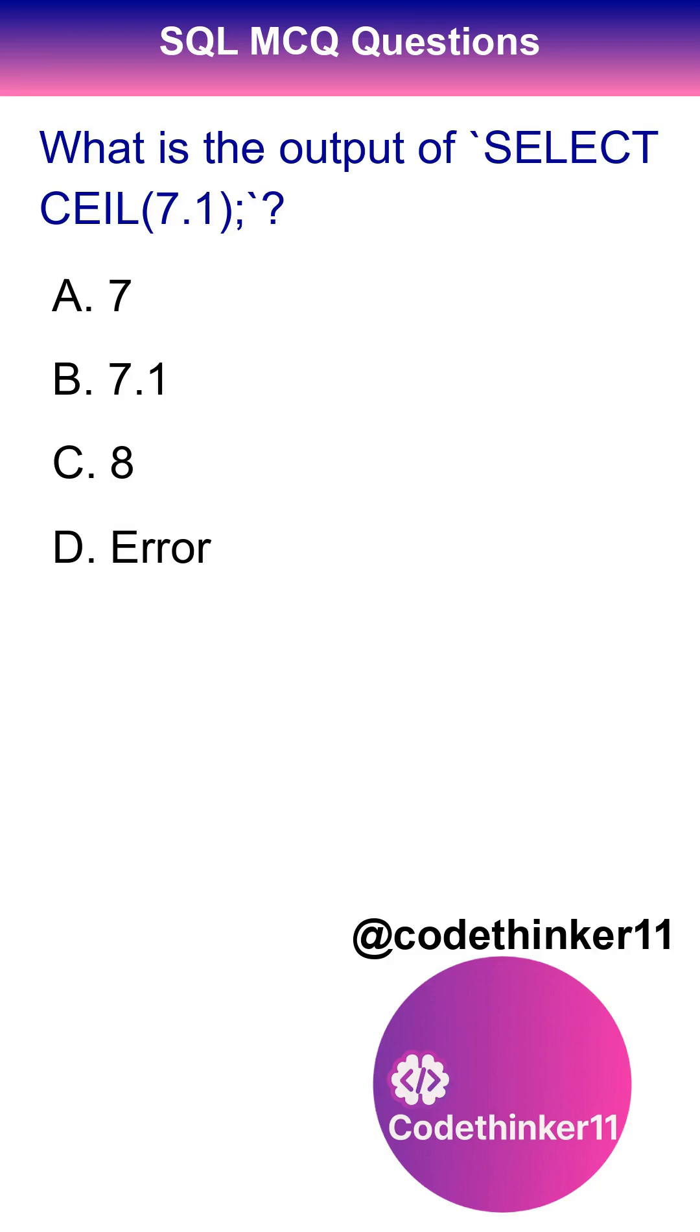What is the output of SELECT CEIL(7.1)? The correct answer is option C.